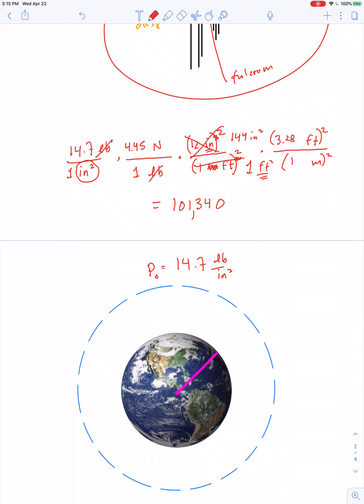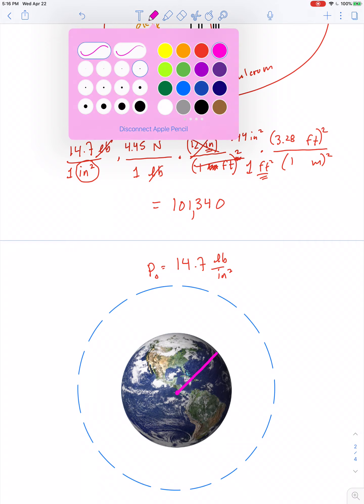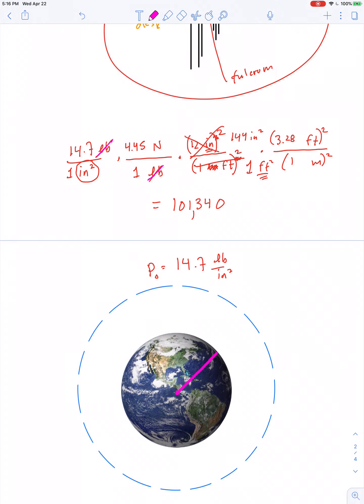Well, pounds canceled with pounds. Newtons remain - they didn't cancel out at all. Square inches canceled out, square feet canceled out, square meters didn't cancel out. That's what we're left with: newtons per square meter. That's what we're after.